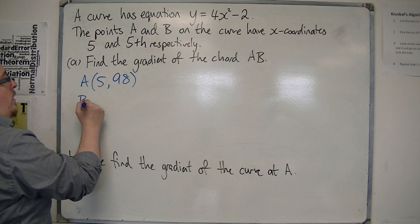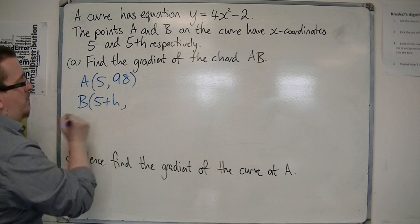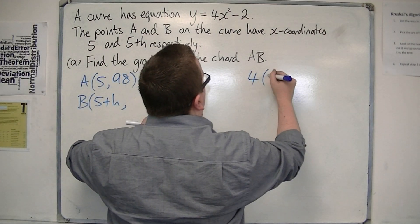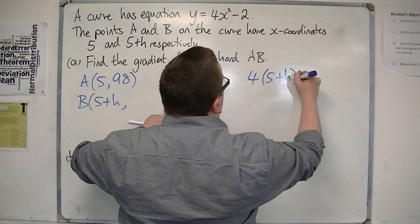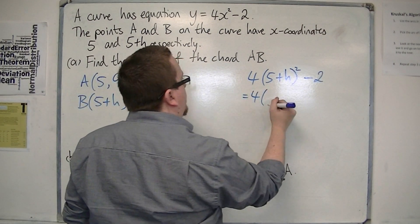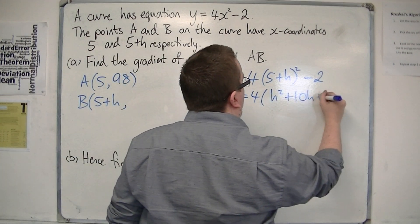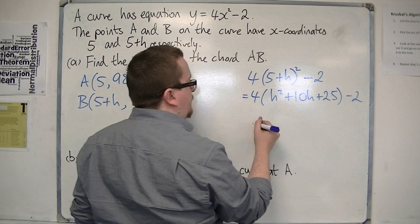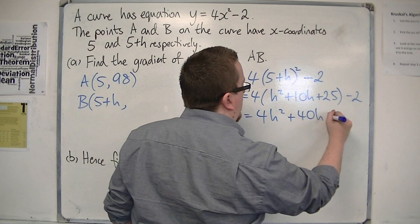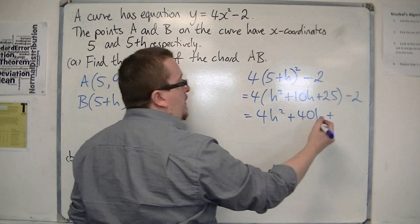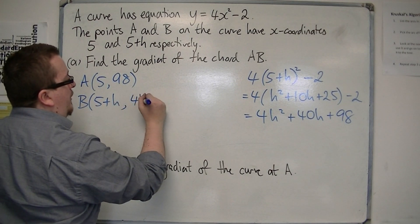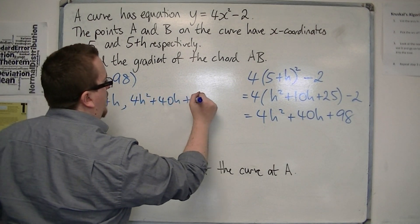Now we also need the y-coordinate of B. We know its x-coordinate is 5 plus h, so its y-coordinate will be 4 lots of (5 plus h) squared minus 2. So that's 4 lots of h squared plus 10h plus 25, minus 2. So 4h squared plus 40h plus 100, take away 2, which makes 98. So the y-coordinate of B is 4h squared plus 40h plus 98.